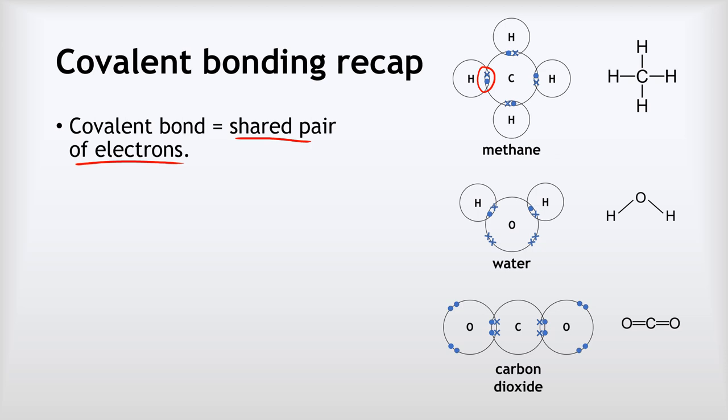If we're drawing a displayed formula like this, then each of these single straight lines represents our covalent bond. So each one of these lines represents that dot-cross shared pair of electrons.